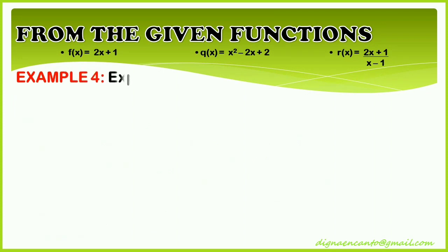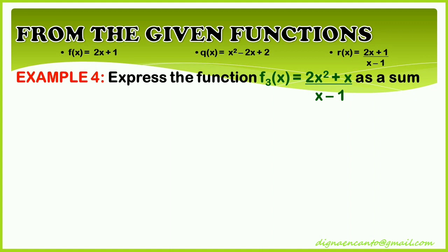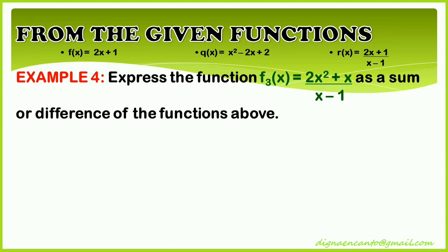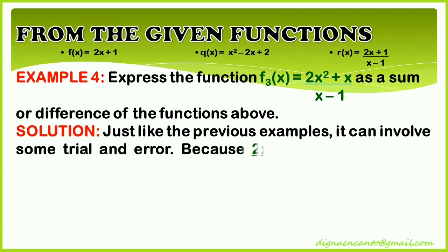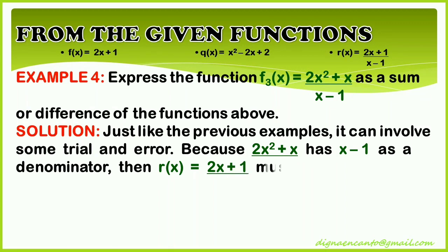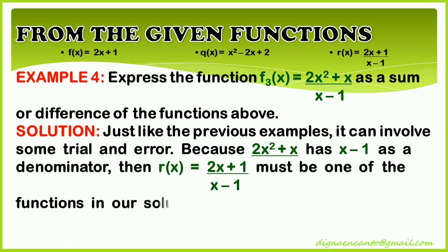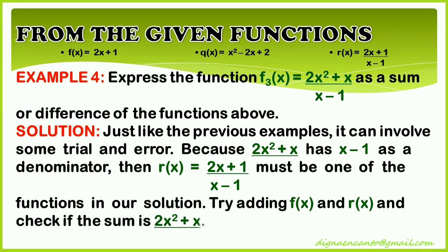Here is example 4: express the function f sub 3 of x equals 2x squared plus x as a sum or difference of the functions above. For the solution, just like the previous examples, it can involve some trial and error. Because 2x squared plus x has x minus 1 as a denominator, then r of x equals 2x plus 1 divided by x minus 1 must be one of the functions in our solution. Try adding f of x and r of x, and check if the sum is 2x squared plus x divided by x minus 1.